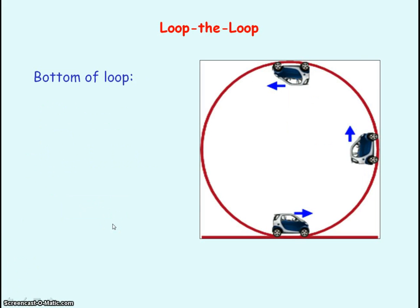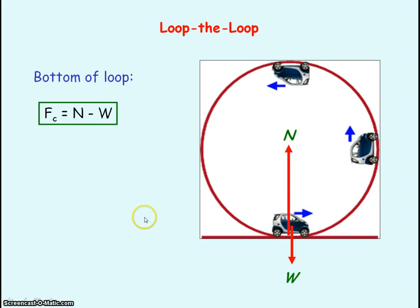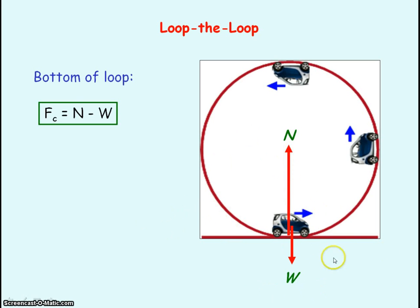And at the bottom of the loop, it is the normal reaction minus the weight that provides the centripetal force, because that will give you a net or resultant force towards the centre of the circle, which is our centripetal force.